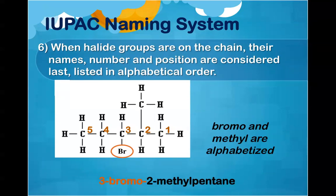Getting back to our structure, we had to take care of the bromine. We're going to talk about why we're calling it bromo in just a little bit. I have the number signifying what carbon it's placed on — the three — and then that we have one bromo. Bromo is coming first in this name because B comes before M. So that's why we end up with the name 3-bromo-2-methylpentane.